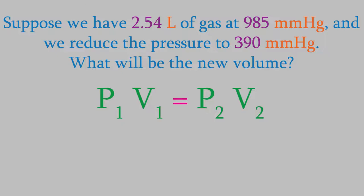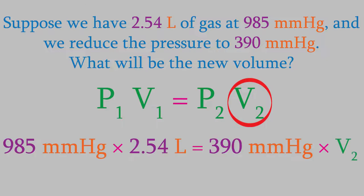The thing we're trying to determine is V2, so we'll solve for that. When we do, we get a result of 6.42 liters. Notice that it wasn't necessary to convert millimeters of mercury into atmospheres. As long as P1 and P2 have the same unit, it doesn't matter what that unit is. As Boyle's Law predicts, the volume went up when the pressure went down. So, Boyle's Law tells us the connection between pressure and volume.